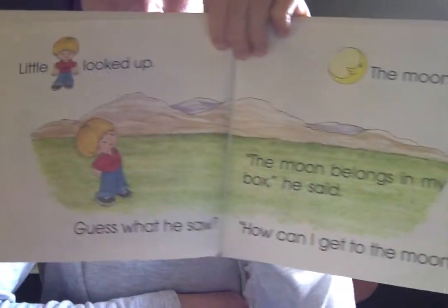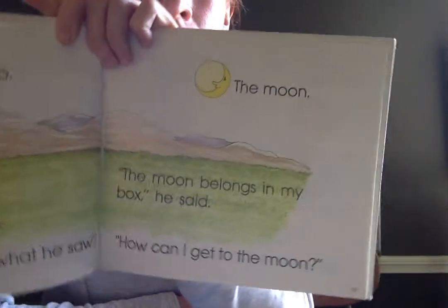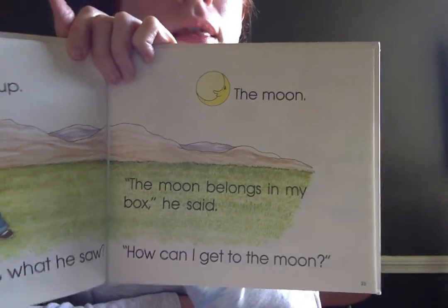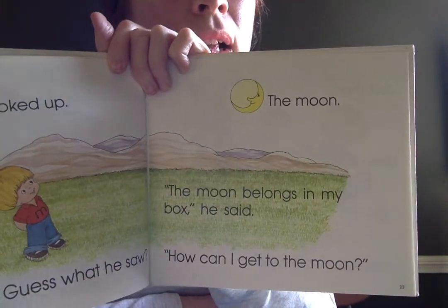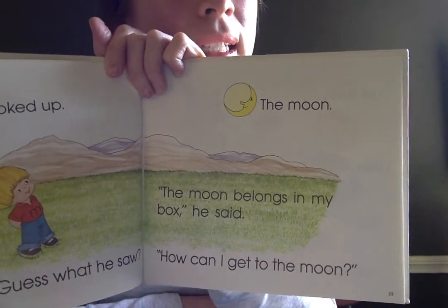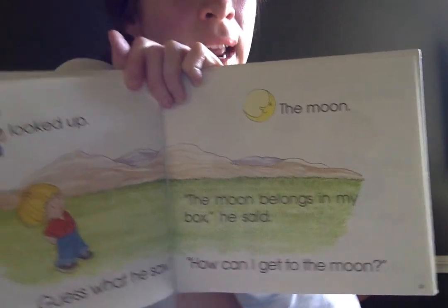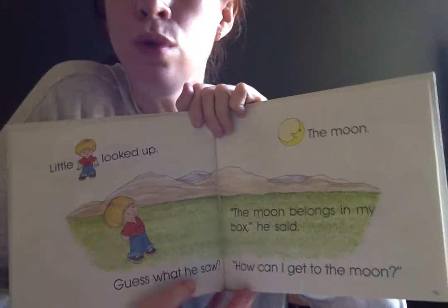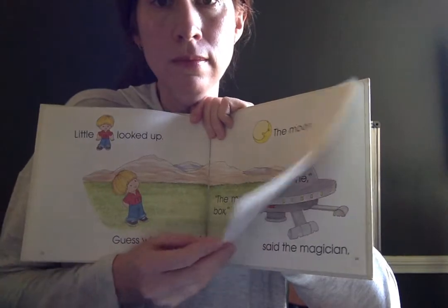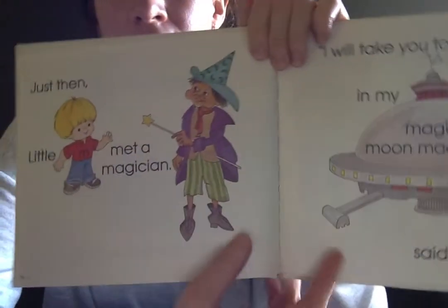Little M looked up. Guess what he saw? The moon. The moon belongs in my box, he said. How can I get to the moon?